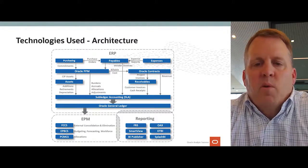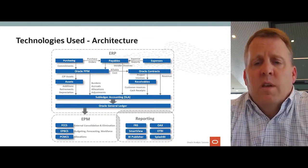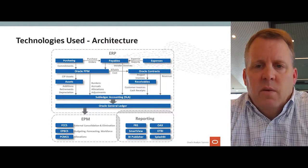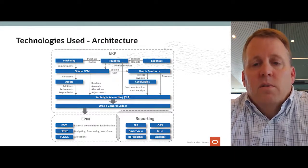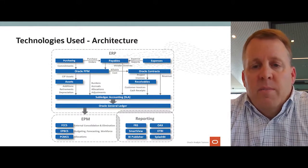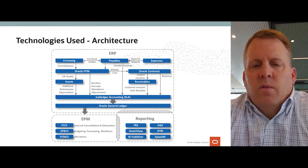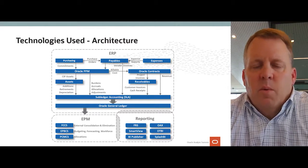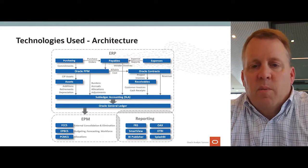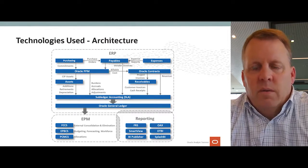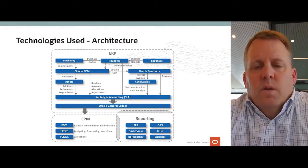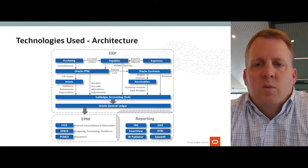We have now implemented portions of the EPM model. We first started with FCCS — our consolidation and elimination product — implemented in first quarter of 2020. Today we are currently implementing EPBCS as well as PCMCS. Within the EPM bundle: FCCS handles our consolidation and eliminations for external reporting; EPBCS handles budgeting, forecasting, and workforce; and PCMCS handles cost allocation modules. From a reporting perspective, we use FRS, SmartView, BI Publisher, OTBI, and SplashBI. The newest on this list for us is OAX.